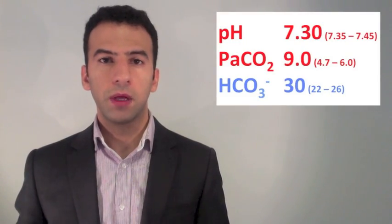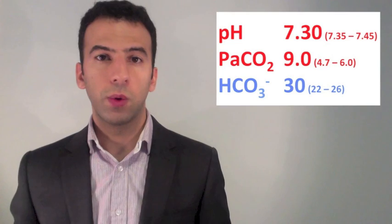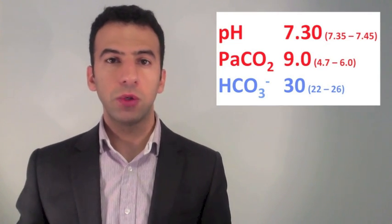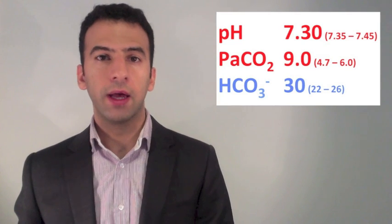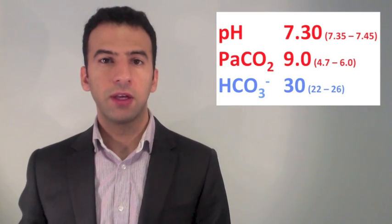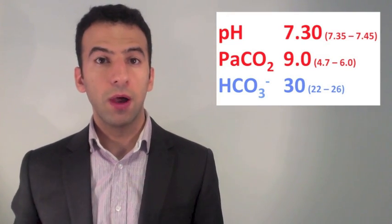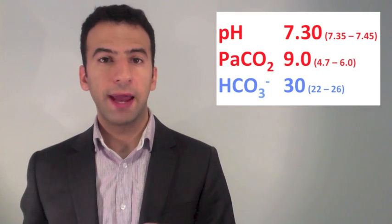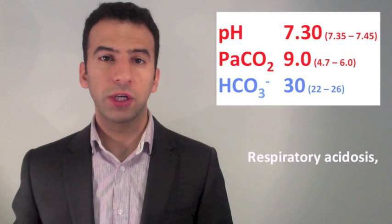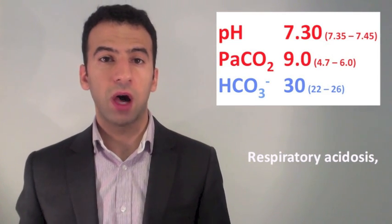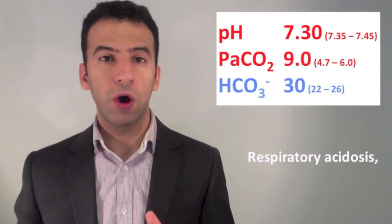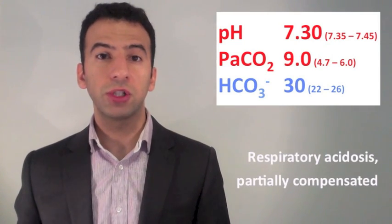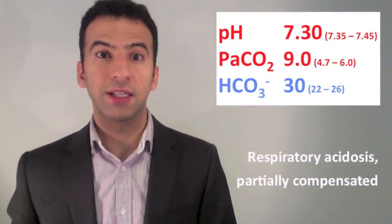Here's your first example. Step 1: look at the pH — it is 7.30, acidemia. Step 2: look at the CO2 — it is high, and that's acidifying. Since Step 1 and Step 2 are both moving in the same direction, this means it is a respiratory problem, a respiratory acidosis. Step 3: look at the bicarbonate — since it is high, it is moving in the opposite direction of the pH, meaning there is some compensation. So this is a partially compensated respiratory acidosis.